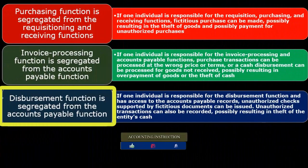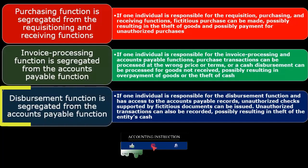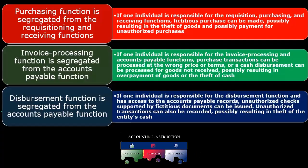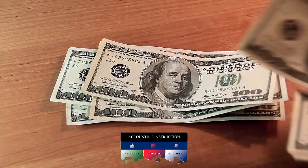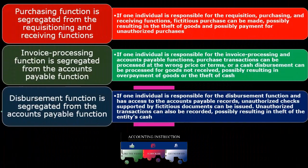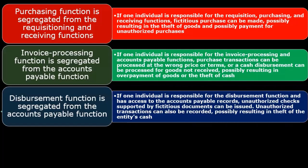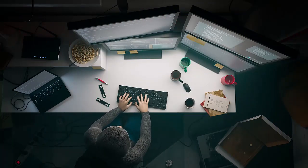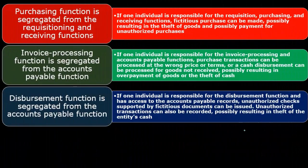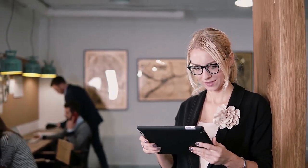The disbursement function is segregated from the accounts payable function. So the disbursement of actual cash is segregated from the accounts payable recording — the reduction of what is owed to the vendor in the books. If one individual is responsible for the disbursement function and has access to the accounts payable records, unauthorized checks supported by fictitious documents can be issued. You can imagine the fraud scenario if someone had the ability to do both — the disbursement of cash as well as recording the decrease in accounts payable. Unauthorized transactions can also be recorded, possibly resulting in theft of the entity's cash.